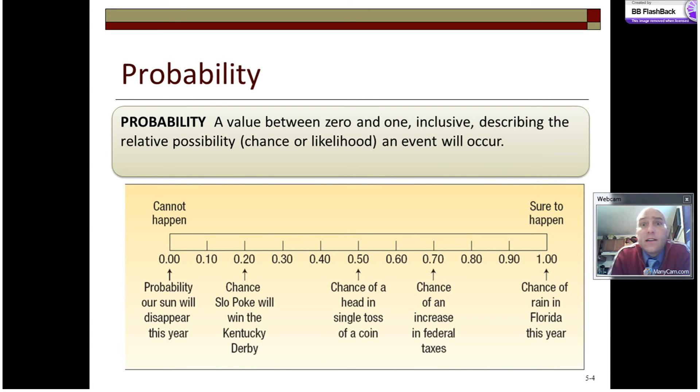The probability itself is a value between 0 and 1, inclusive, so it can be 0 or it can be 1, describing the relative possibility, the probability, the likelihood that something is going to happen. For example, a probability of 0 means that something definitely won't occur, like the sun blowing up right now. Nope, it didn't happen. The probability of 1 means that it will definitely happen. So it will definitely rain in Florida this year and it will definitely fall when I drop my hat. So a 0 is definitely not. 1 is definitely will.